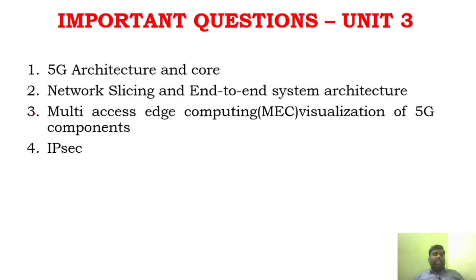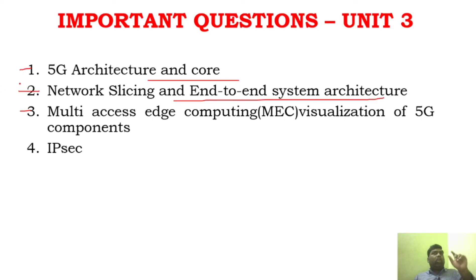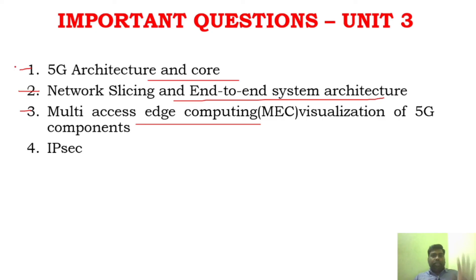For Unit 3, there are a lot of questions and three of them are mandatory. The key topics are: 5G architecture and core, NPN system architecture and core, network slicing, and multiple edge computing. In the three questions, you definitely need to know these. Also, 5G protocols are important because there are a lot of protocols in Unit 3.